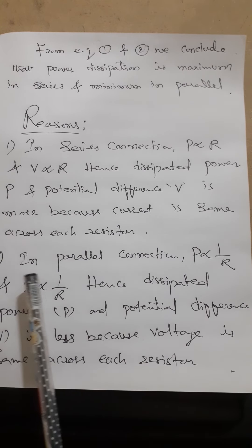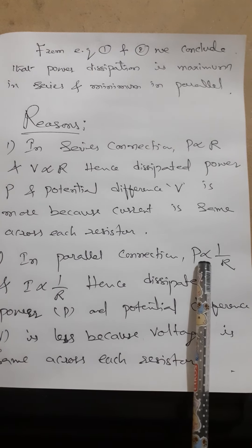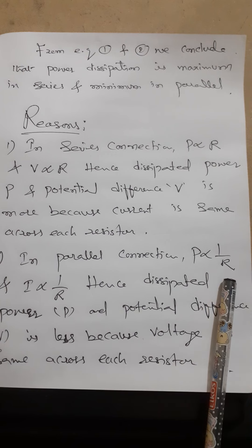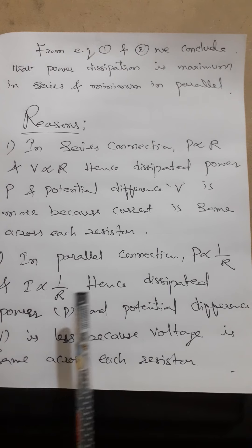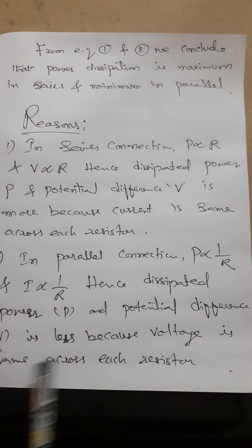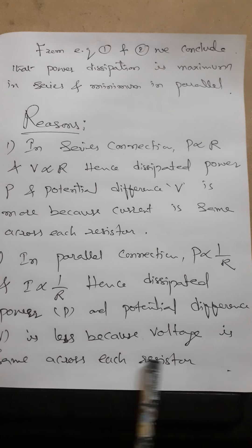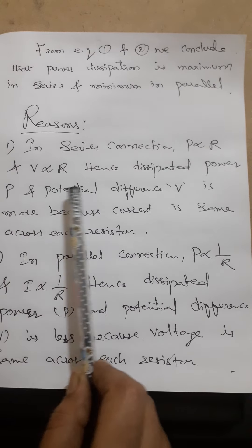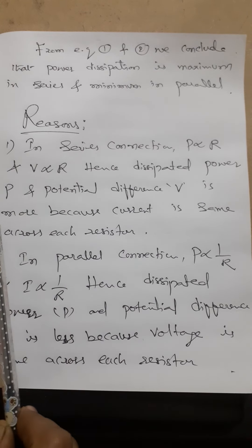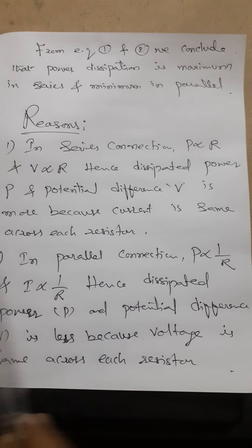For the minimum power in the parallel connection: in a parallel connection, power is proportional to the reciprocal of the effective resistance, and current is also proportional to the reciprocal of resistance. Hence the dissipated power and potential difference are less because the voltage is the same across each resistor. In parallel, voltage is same; in series, current is same. Thank you — for more videos, subscribe to my channel Physics.